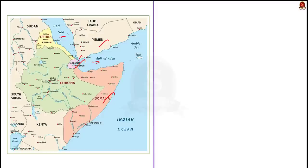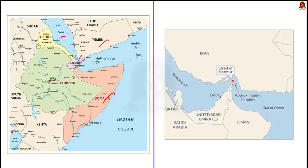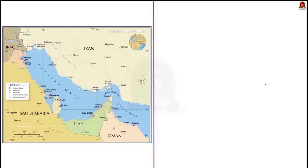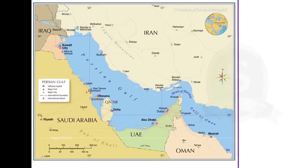Moving on to the Gulf of Oman — the countries bordering it include Oman, the United Arab Emirates, and Iran. Finally, let us see the Persian Gulf. The countries that surround the Persian Gulf are Bahrain, Iran, Iraq, Kuwait, Qatar, Saudi Arabia, and the United Arab Emirates.